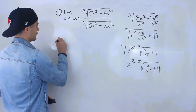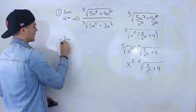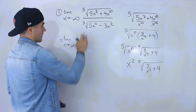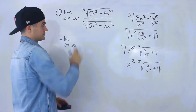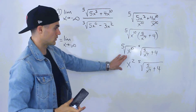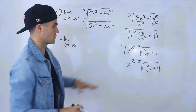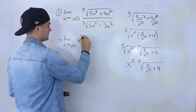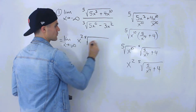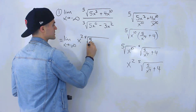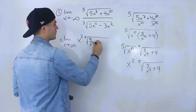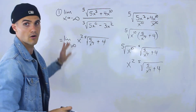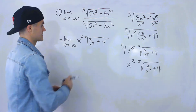Going back to the main limit, we convert the numerator expression to x² times the fifth root of (5/x^7 + 4). This and the original expression are exactly the same thing.